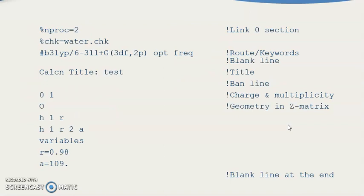So %nproc=2 is the link zero section. %chk=water.chk. Then B3LYP/6-311G++ (3df,2p) opt frequency is the root section with keywords. Then you have the blank line, then the title, then again a blank line, then charge and multiplicity, then geometry in Z-matrix, and then a blank line.